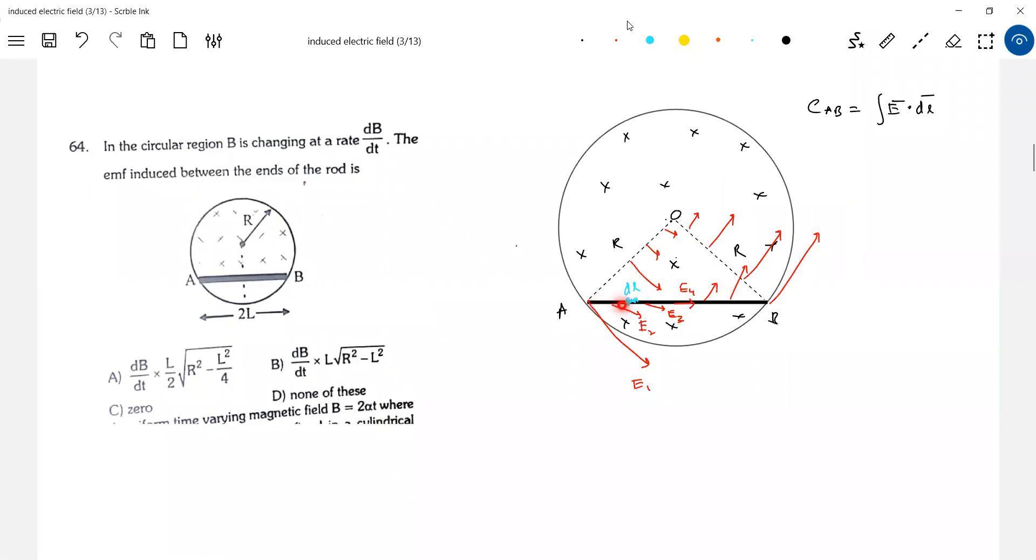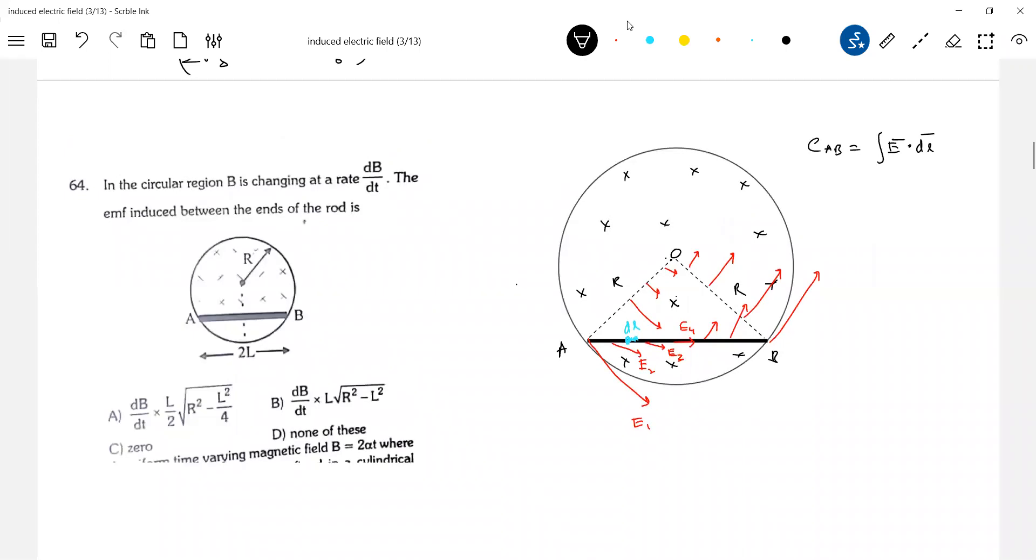So at different points on the rod, E will be different, magnitude will be different. And also the angle made by E bar with DL element will be different here. So can we integrate? Not possible. So how will this expression end up? We'll be in big trouble.